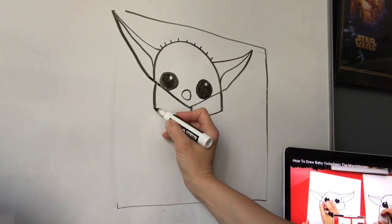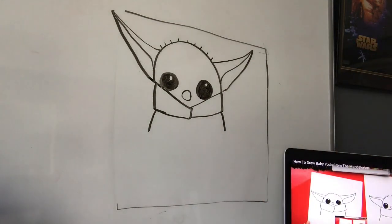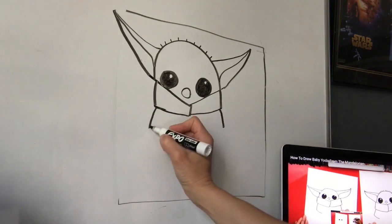Now we're gonna do two little diagonal lines. They come down. They're gonna be his arms. Like that. And now you'll make an L.